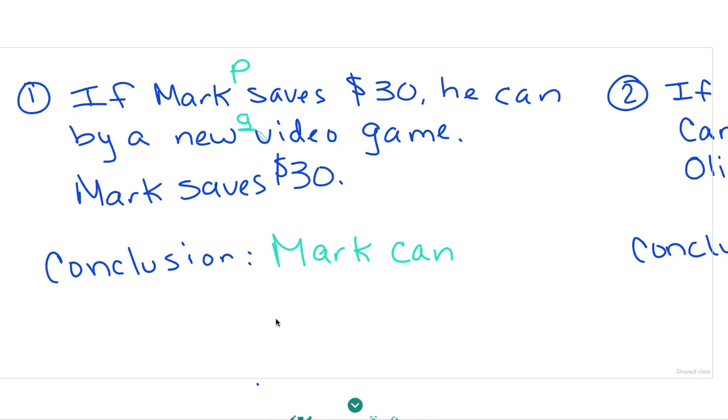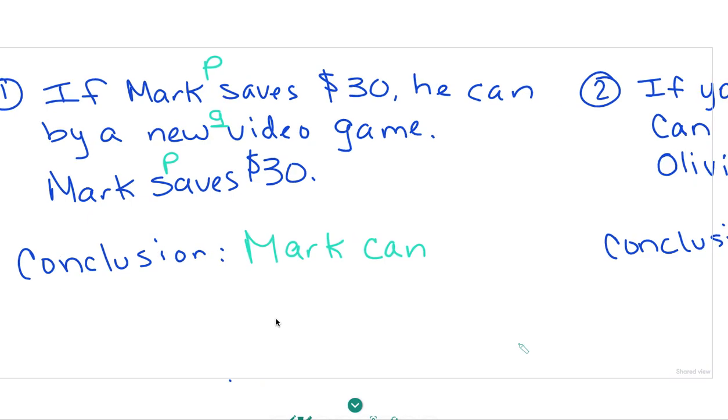That's my Q. Mark saves $30, so my P, or my hypothesis, is true. Therefore, our conclusion will be that Mark can buy a video game.